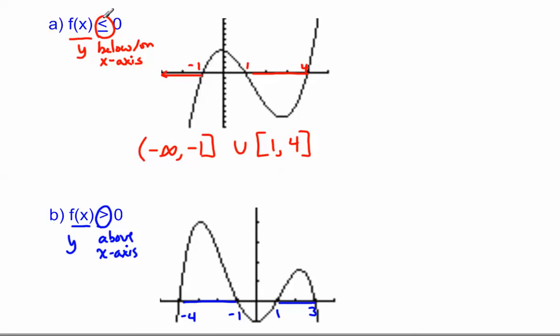and they want to know where is f(x) less than or equal to 0. So I want to know where are my y's below or on the x-axis, or on because of the equals. Well, this back section here, I'm going to have negative y's. Here I have positive y's. I don't want that. Here I'm going to have negative y's along this section, so I'm going to want that. But no, I have positive y's over here.